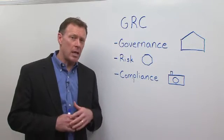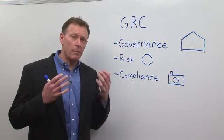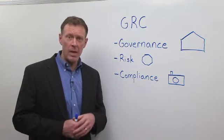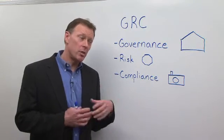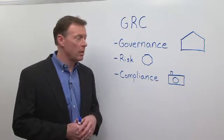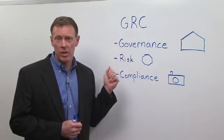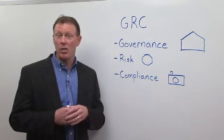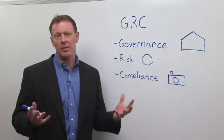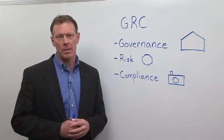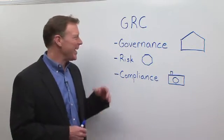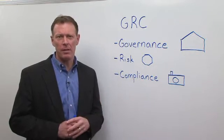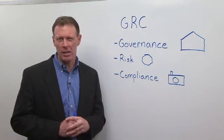Compliance, for instance, may mean complying to a particular legal mandate, but maybe it's complying to an internal policy mandate. Risk could be financial risk, could be IT risk, could be geopolitical risk. There are a lot of different types of risk that people might be referring to. And governance is this kind of amorphous term that is really hard to get a handle on.